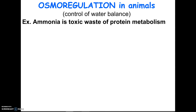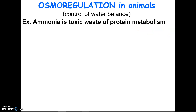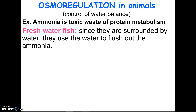This has been on the AP exam a couple of times. Whenever you metabolize protein — when you break protein down — one of the things that happens is the amino group comes off of the amino acids, and that amino group will turn into ammonia. Ammonia is very, very toxic. Fish are surrounded by fresh water, so when they make toxic ammonia, they just use the water around them to flush it out — they basically lose the ammonia at their gills. It doesn't take any energy to make ammonia, so they make it and flush it out with water.